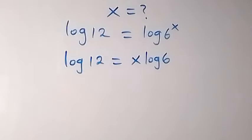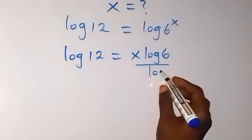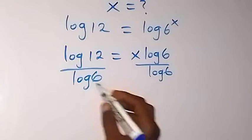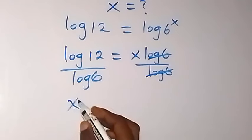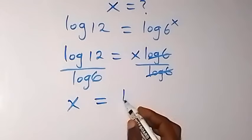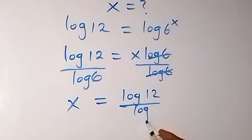In the next step, we divide both sides by log 6 to isolate x. We now have x equals log 12 over log 6.